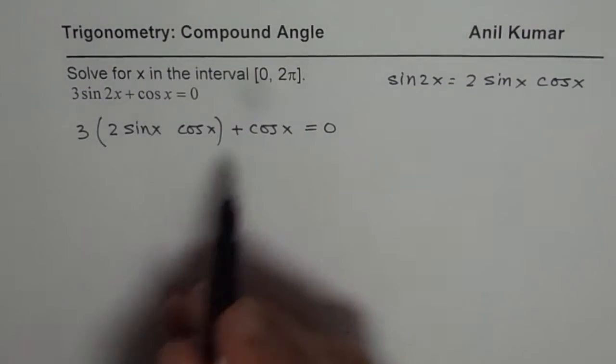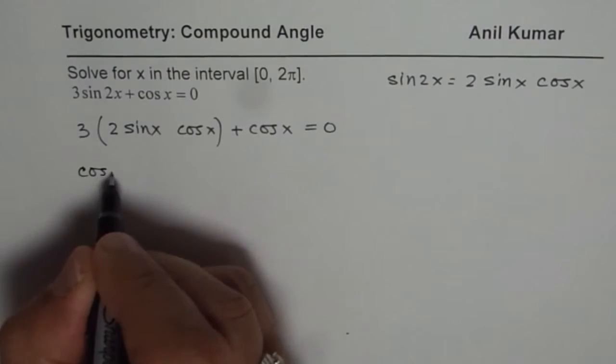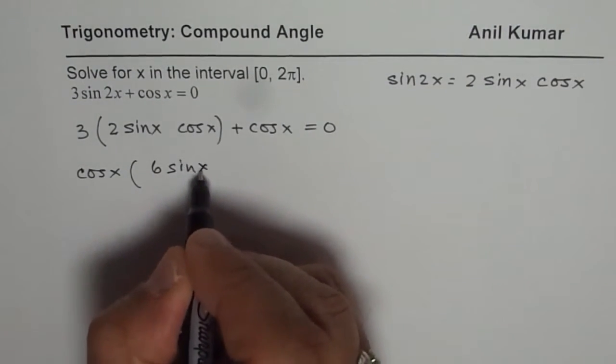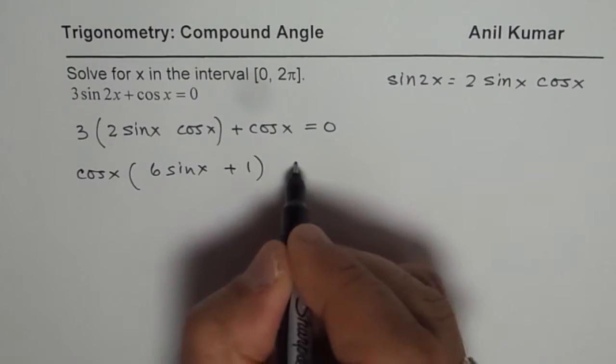Now we can factor cosx. So if you factor cosx, what do you get? 3 times 2, 6sinx. cosx from the first term and 1 from the second term.